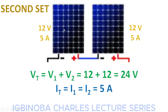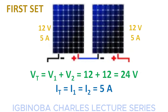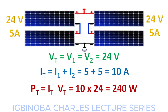For the second set, the process is the same since all panels have the same parameters. V_total equals V1 plus V2 equals 12 plus 12 equals 24 volts. The total current again equals the current rating of one of the panels, which is 5 amps. So we have done the series connection for both sets: the first set gives 24 volts, 5 amps, and the second set also gives 24 volts, 5 amps.